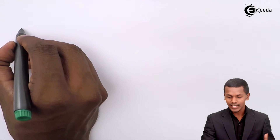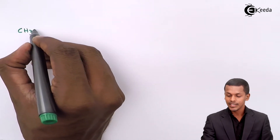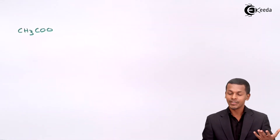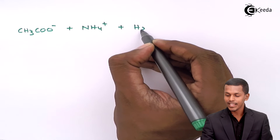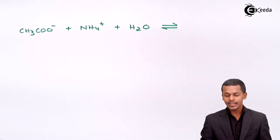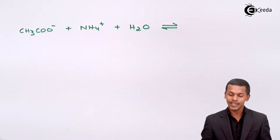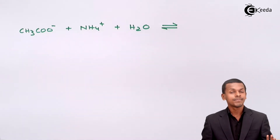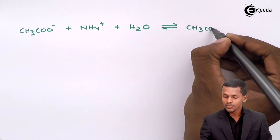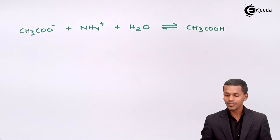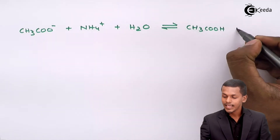When we dissolve ammonium acetate, CH₃COONH₄, it dissociates into NH₄⁺ and CH₃COO⁻, and these react with H₂O. The acetate ion CH₃COO⁻ combines with the hydrogen ions of water to form CH₃COOH, a weak acid. And NH₄⁺ combines with the OH⁻ ions of the water molecule to form NH₄OH, a weak base.